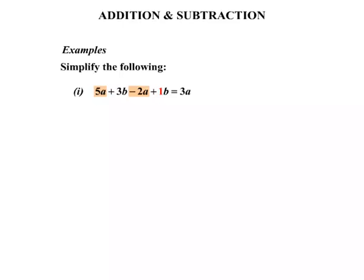Now is there anything else? Yes there is the b term. There's a plus 3b and looking a bit further we have plus 1b. So if we have plus 3b plus 1b that is plus 4b. So our answer there is 3a plus 4b.